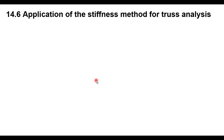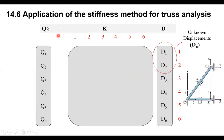By the stiffness method for truss analysis, we start with the first equation: Q equals K times displacement, where Q is the forces in the global coordinates, K is the structural stiffness matrix, and D is the displacement at different degrees of freedom in the global coordinates. This equation will be written in the form of a matrix, as you can see here.